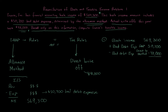The book income of $569,300 already had the $50,700 bad debt expense subtracted away. For taxable income, we don't use that number, so we add it back. We do use the direct write-off method, meaning the $48,000 of actual write-offs during the year gets subtracted. So: start with book income, add back $50,700, subtract $48,000, and the taxable income equals $572,000.